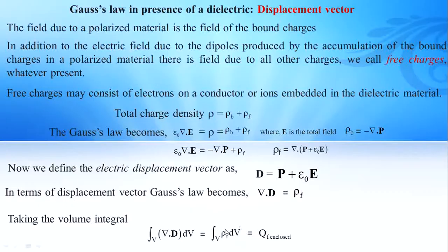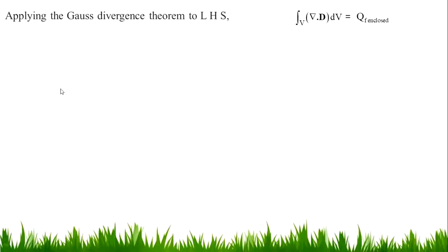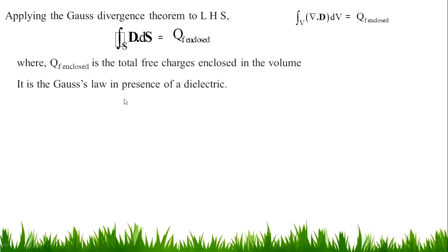Volume integral of rho_f dV is Q_f enclosed. The final equation after applying Gauss's divergence theorem: closed surface integral of D dot dS equals Q_f enclosed, where Q_f enclosed is the total free charge enclosed in the volume. This is Gauss's law in presence of a dielectric.